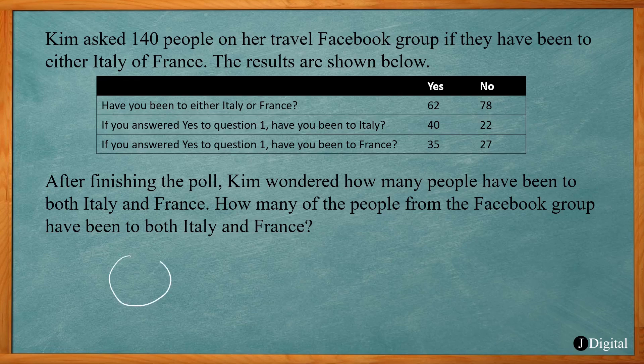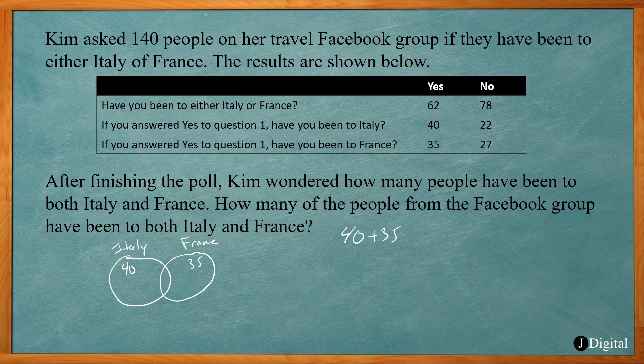If I draw a Venn diagram of the situation, I'll have a circle for Italy and a circle for France. If I just wrote 40 in Italy and 35 in France, those add together to give you 75. Now that is more than the 62 that said they went to either Italy or France.